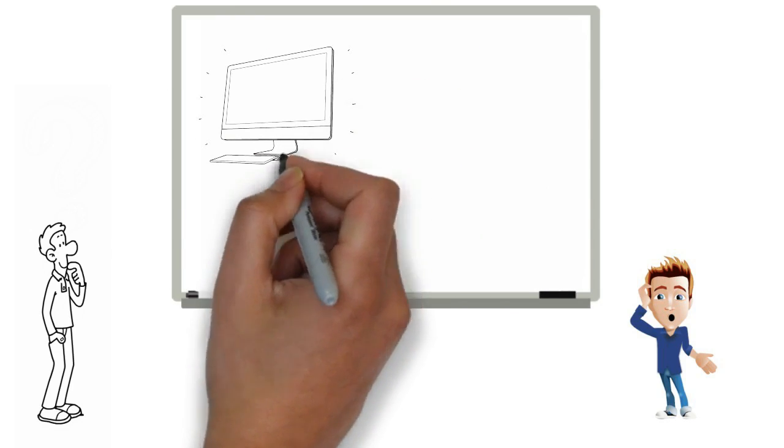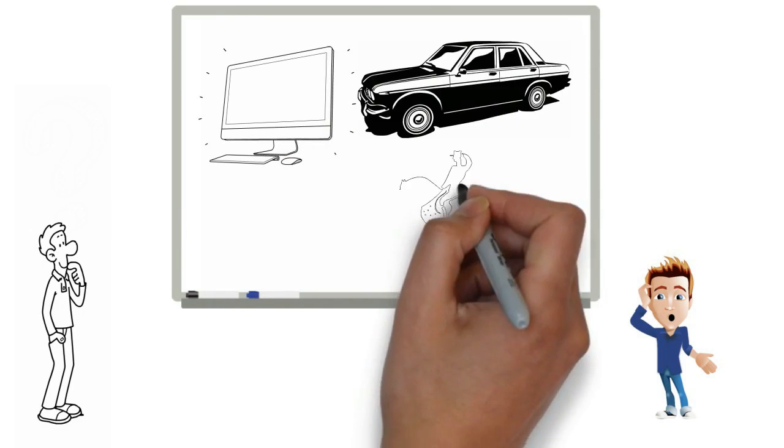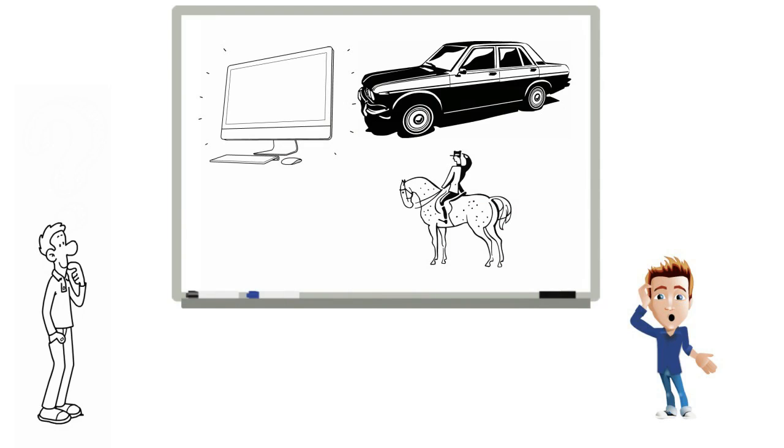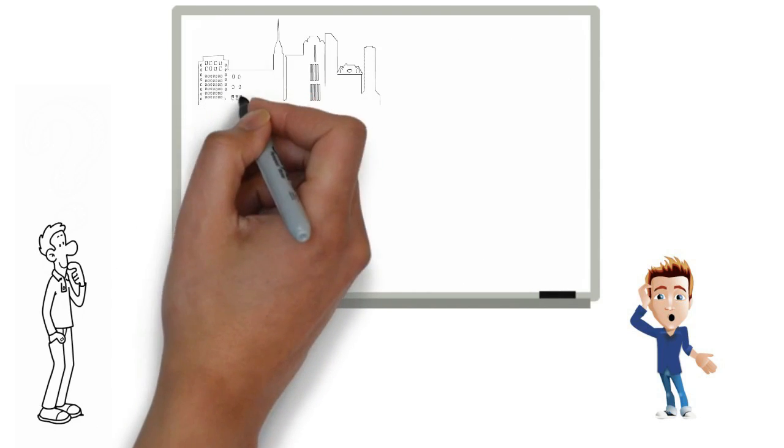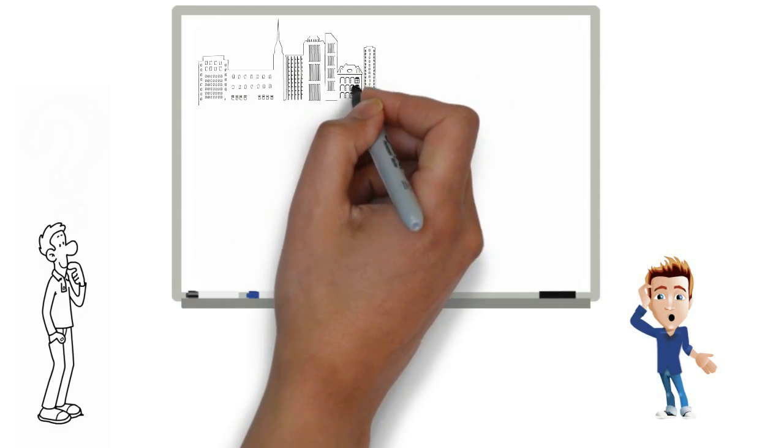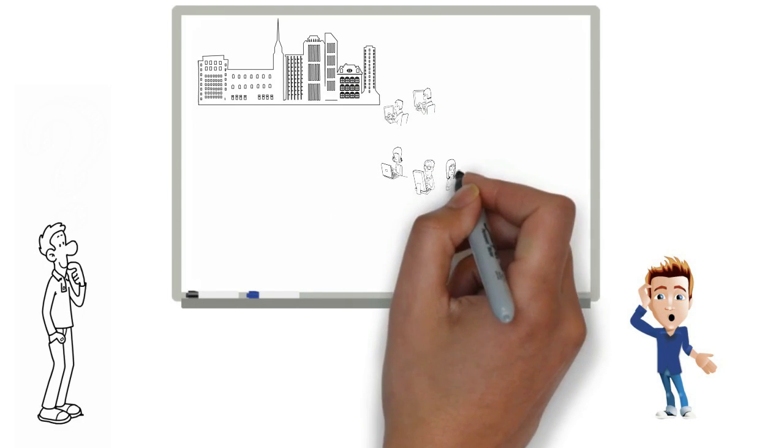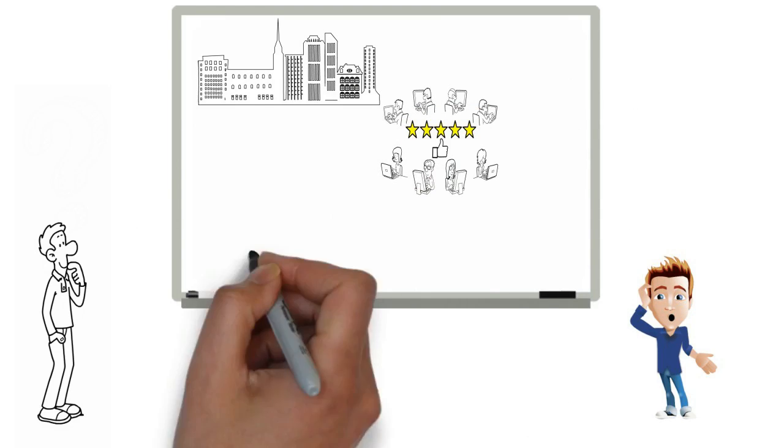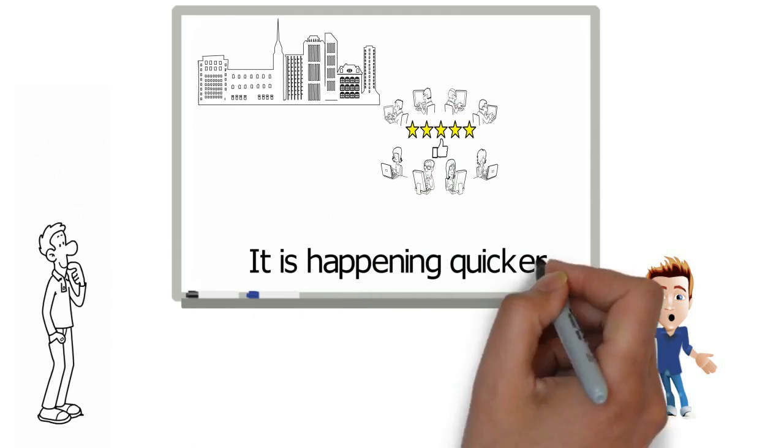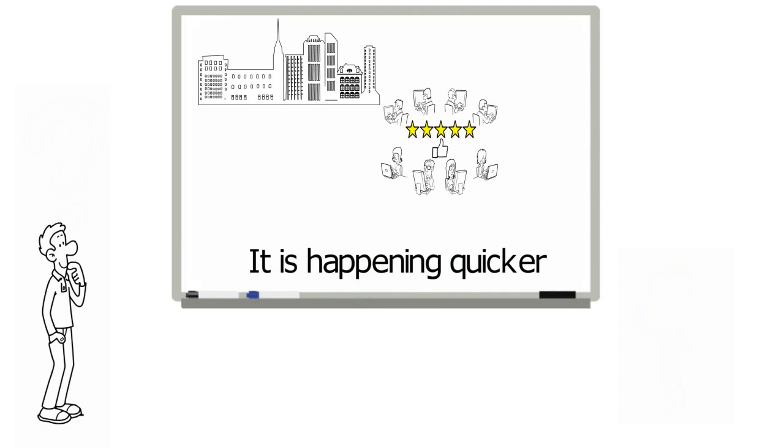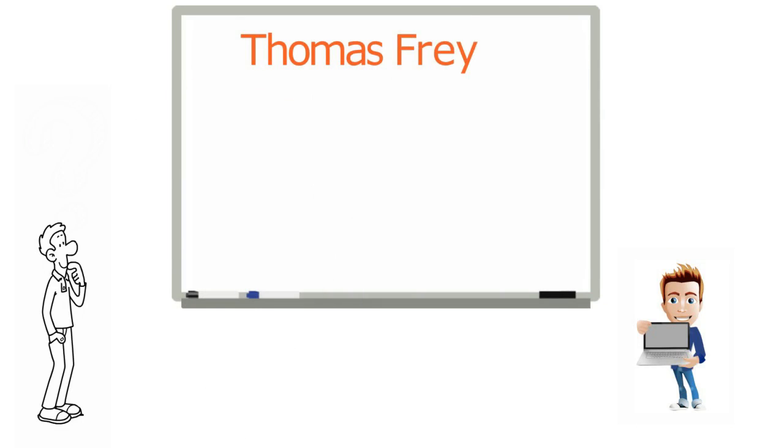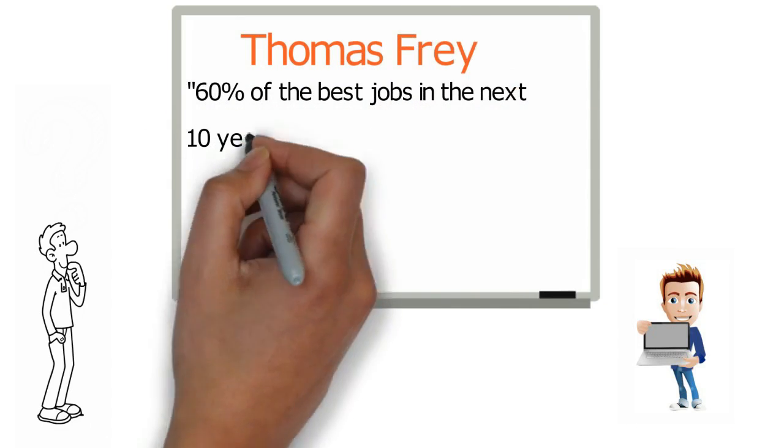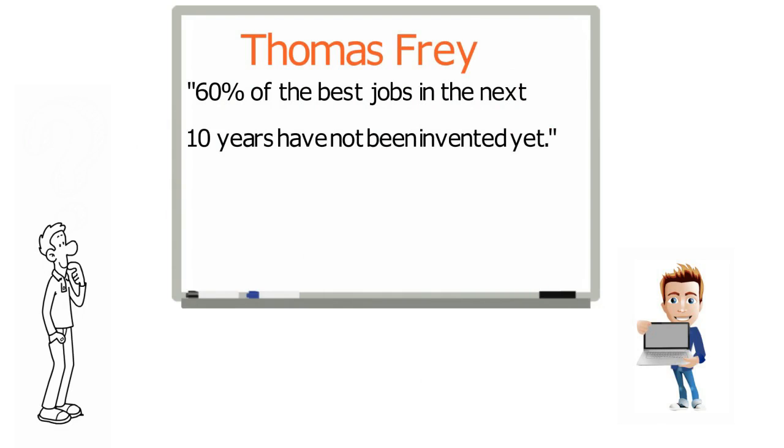But it's happened before. The motor car replaced the jobs of the horseman and carriage builder. It also gave rise to a massive improvement in living standards and a multitude of industries, let alone jobs. The difference these days is that it is happening quicker. It really is an exciting time, and we need to be prepared for it. In the words of Thomas Frey, 60% of the best jobs in the next 10 years have not been invented yet.